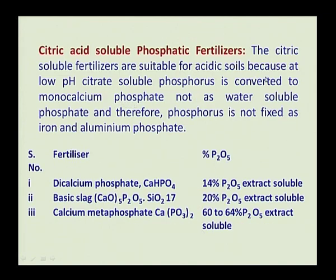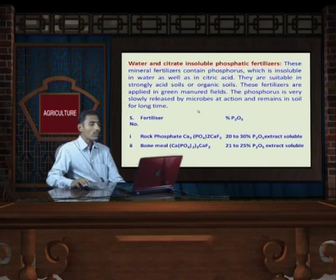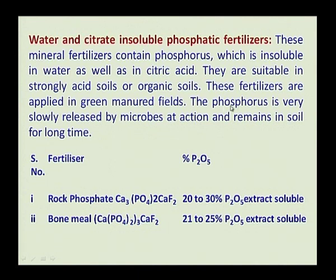Citric acid soluble phosphatic fertilizers are suitable for acidic soils because at low pH, citrate-soluble phosphorus is converted to monocalcium phosphate, which is water soluble and therefore available to the plant. Examples include basic slag (14 percent P2O5), basic silage (20 percent P2O5), and calcium metaphosphate (60 to 64 percent P2O5). Water and citrate insoluble phosphatic fertilizers are insoluble in both water and citric acid, suitable for strongly acidic and organic soils. They release phosphorus slowly via microbial action. Examples: rock phosphate (20 to 30 percent P2O5) and bone meal (21 to 25 percent P2O5).